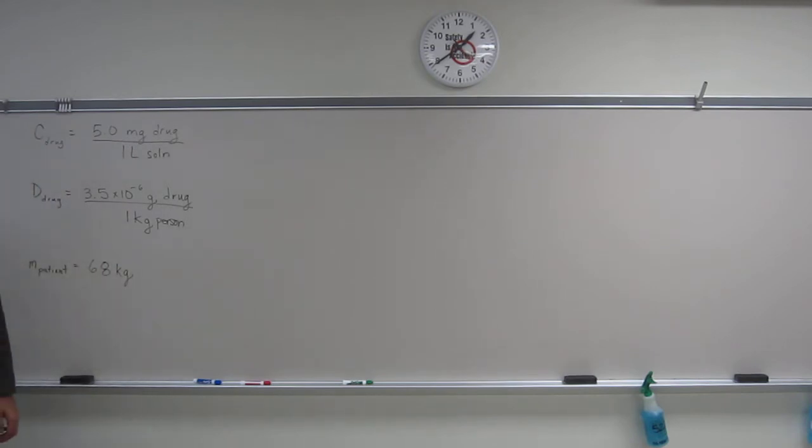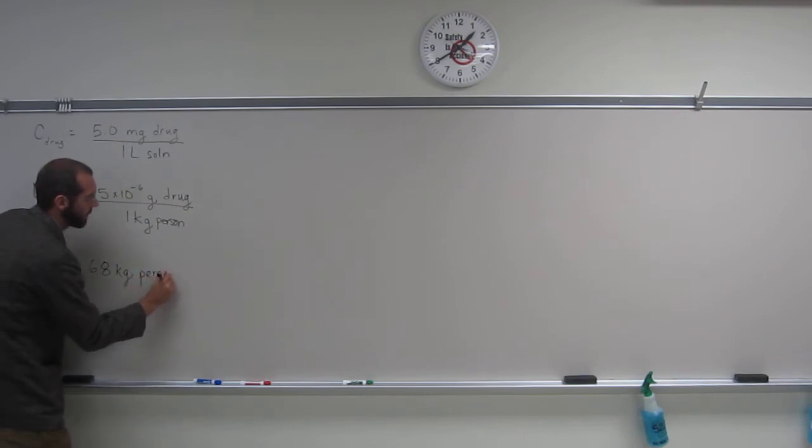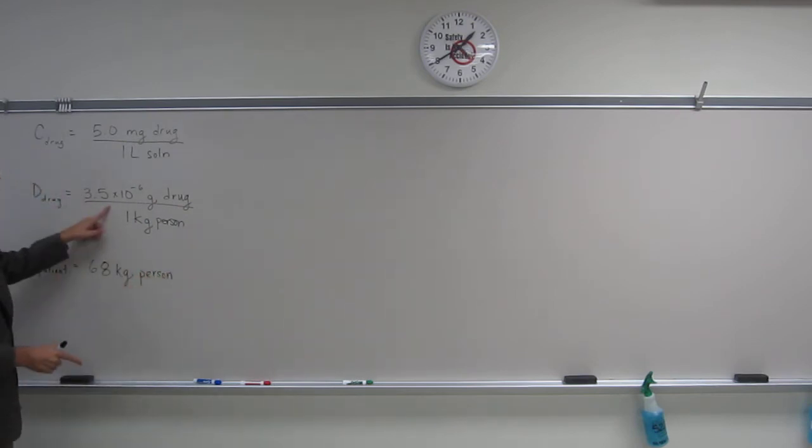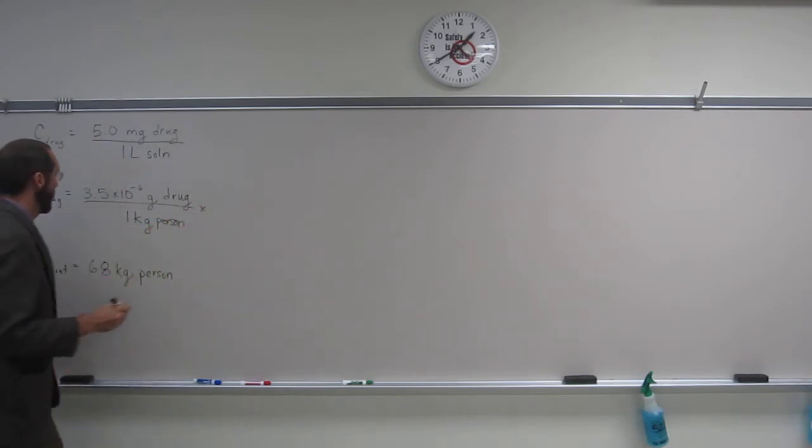And then it asks, what volume of solution would you prescribe for the daily dosage? Okay, so this is all the information we actually need in order to figure this out. In order to figure out the number of grams of the drug we're going to administer, we're just going to cancel out the kilograms, because this is really kilograms of a person, right? We're just going to use this combined with this, canceling out the kilograms.